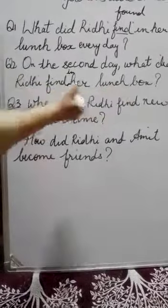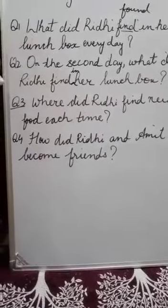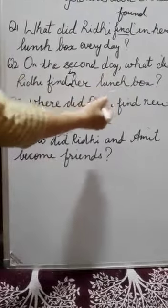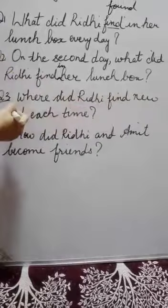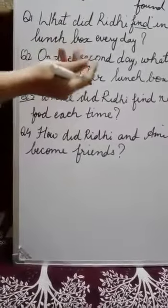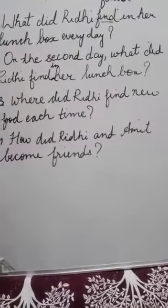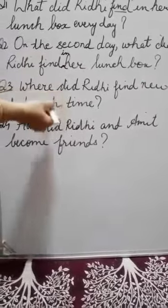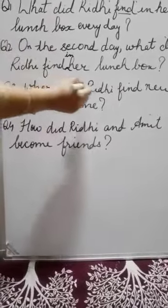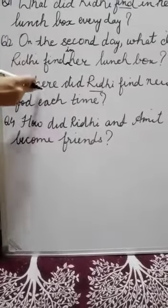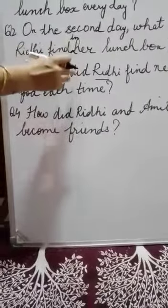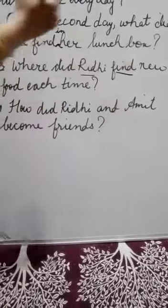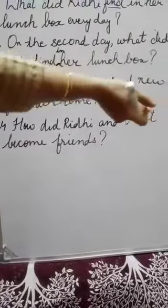Now next question: where did Rithi find new food each time? Rithi found new food in school each time. From here you will start your answer. You will not start with 'where' or 'there.' Whenever 'did' is written in the question, you have to change the form of the verb — find becomes 'found' in the answer.